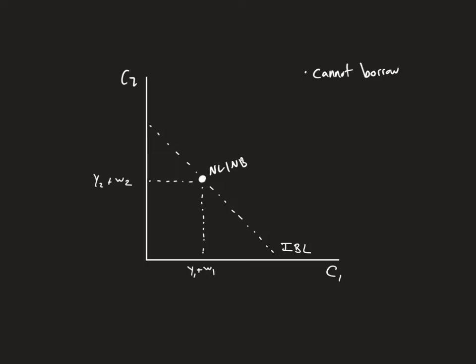Well, what happens if they cannot borrow? Then this entire section right here is no longer able to be had. What that means is we have a straight line down and my budget constraint ends up being cut off at the no lending, no borrowing point. So all of these consumption bundles here — all of these possibilities of consumption bundles — are no longer attainable, because this person is borrow constrained.